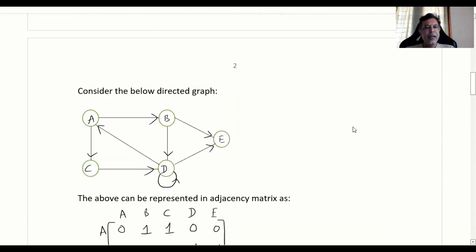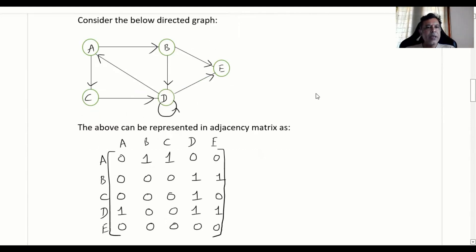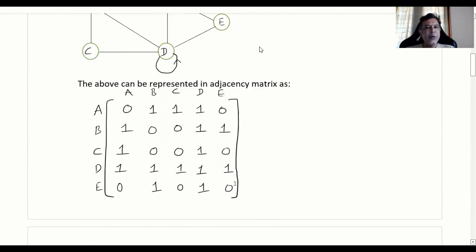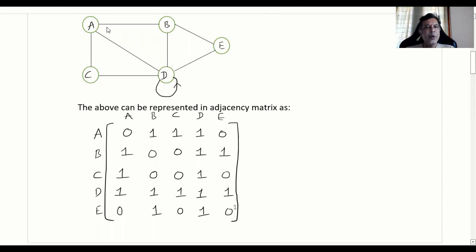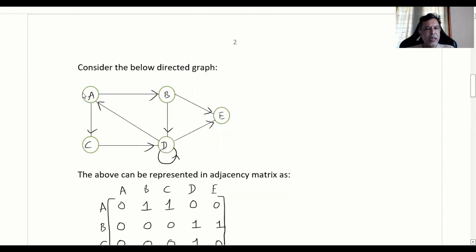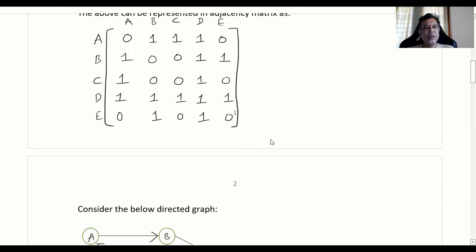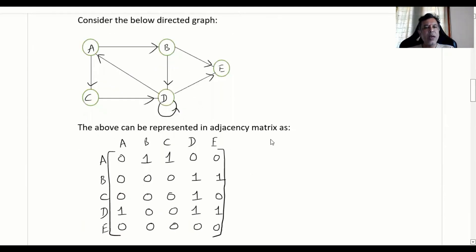Now let us consider the example of a directed graph like this: A, B, C, D, E again five vertices. So here the direction is important. Earlier when you have A, B we put 1 in both A, B as well as B, A, whereas here you will put only in A, B whereas B, A you will put 0. So B, A is 0, A, B is 1. Otherwise it will be very similar wherein we will be filling up only 1s and 0s.